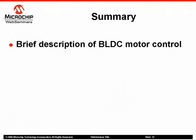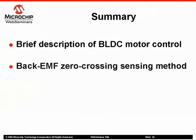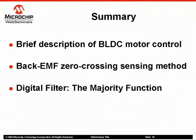In summary, we have discussed the six-step commutation technique used to control a brushless DC motor. We have discussed a sensorless method to control the commutation based on the back EMF signal. In order to precisely determine the commutation time, these signals are filtered using a digital filter based on a simple majority function.